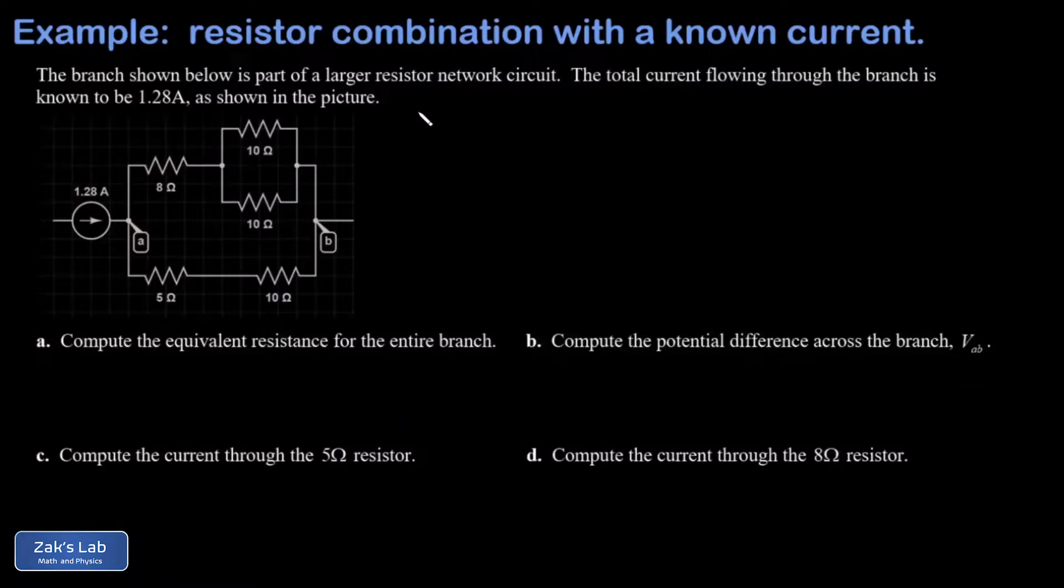In this video we're looking at a resistor network that is just a branch of a larger circuit. What's known in this case is that we have 1.28 amps flowing through this particular branch. We're going to simplify this down to one equivalent resistance and then answer a variety of questions about what's going on inside this branch.